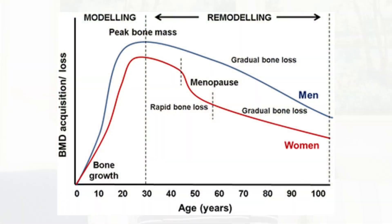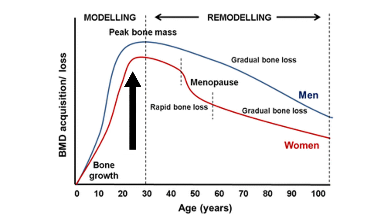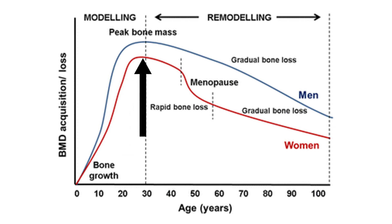B is for bone density, which changes throughout the course of our lives. By about age 20, most of our bone density has already been established, and throughout our 20s we continue to increase in bone density just a little bit more. We then reach peak bone density at about age 30.